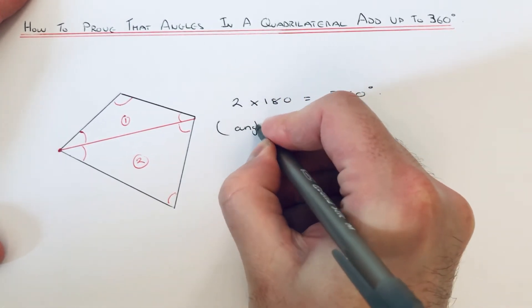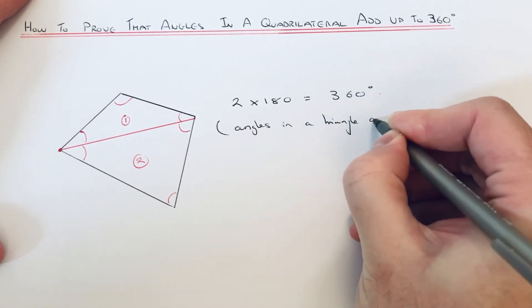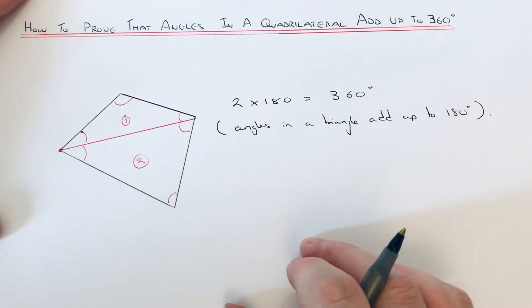So this proves that the angles in the quadrilateral add up to 360.